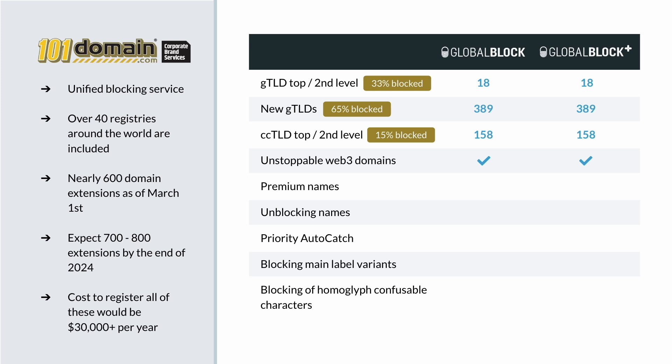Remember that both GlobalBlock services include premium names, unblocking names, and priority auto-catch. Additionally, GlobalBlock Plus includes unlimited blocking of your primary term or main label, as well as standard variants if you have spaces, hyphens, or ampersands in your term. It also includes blocking of confusing and lookalike characters.